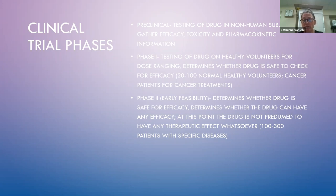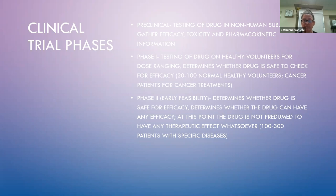Phase two, or early feasibility, determines whether the drug is safe and whether it can have any efficacy. At this point, the drug is not predetermined to have any therapeutic effect whatsoever. About 100 to 300 patients with the specific disease being studied are involved.